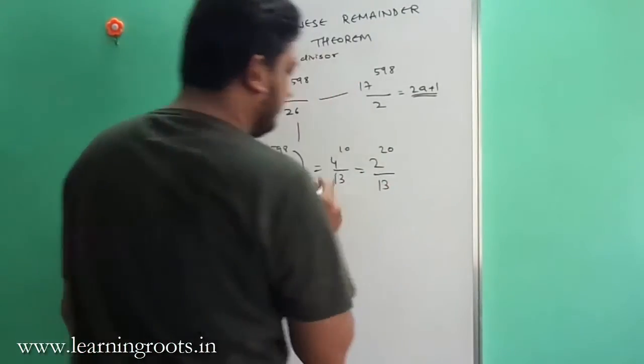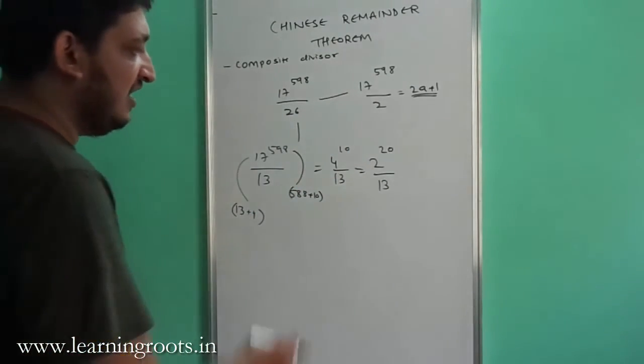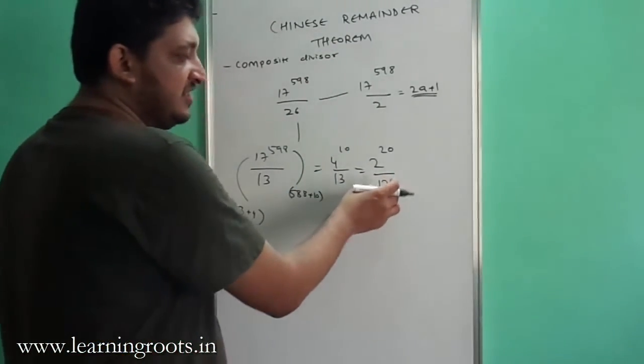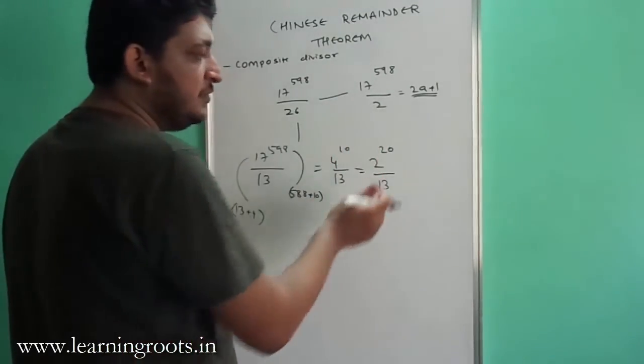2 raised to 20 mod 13, because 4 is nothing but 2 squared. So 2 raised to 20 mod 13, again the Euler coefficient is 12, so 2 raised to 12 gets cancelled out and we are left with 2 raised to 8.